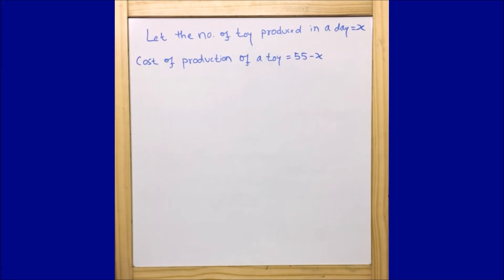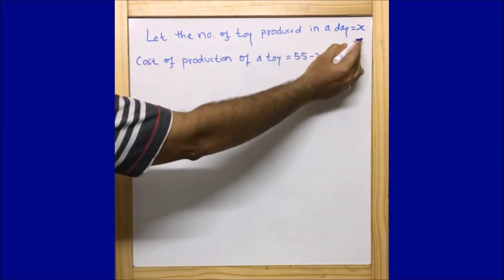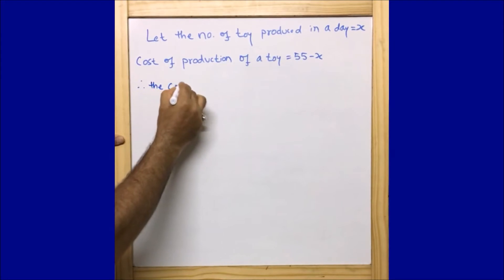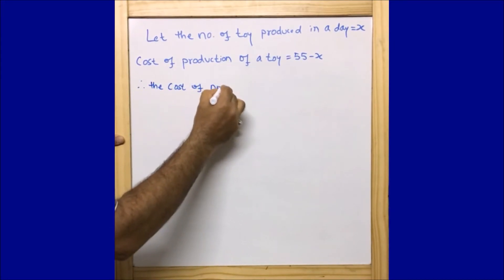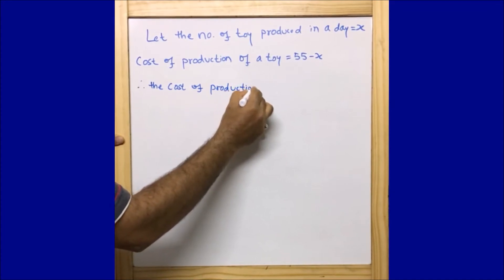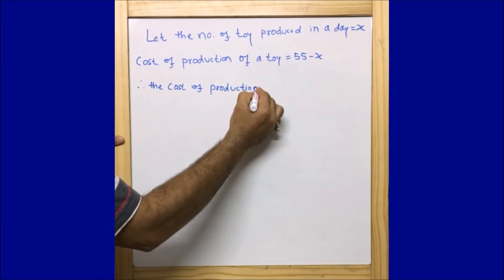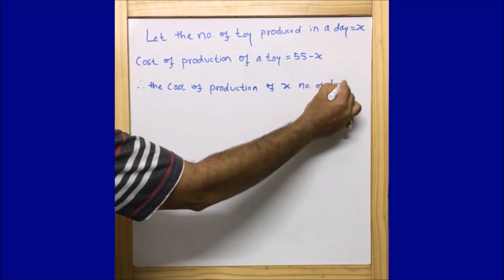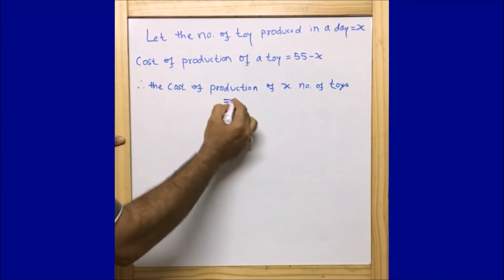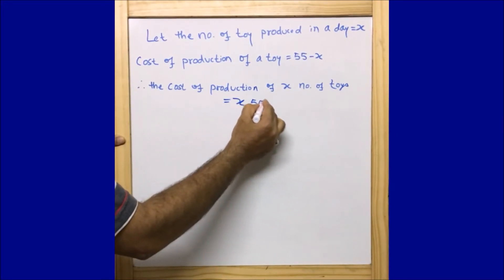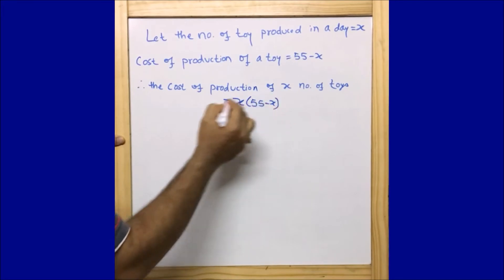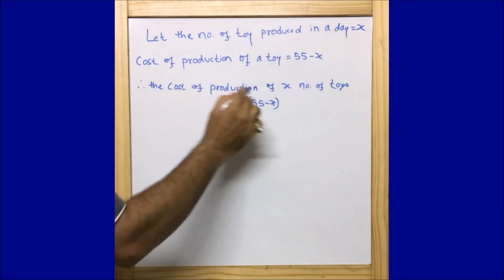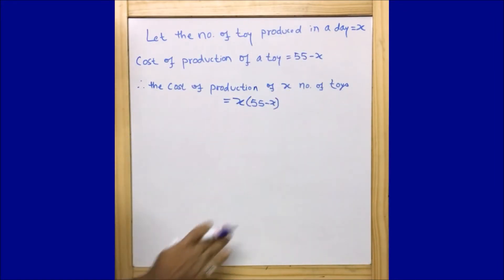Therefore we can write: the cost of production of x number of toys — that means in a day x number of toys are manufactured — is equal to x into (55 minus x). The cost of production of a single toy is 55 minus x, and the number of toys produced in a day is x. So the cost of production of x number of toys is x into (55 minus x). It is simply a multiplication.